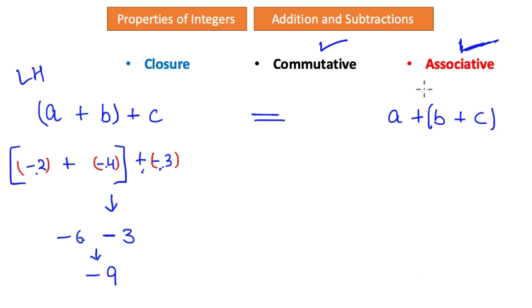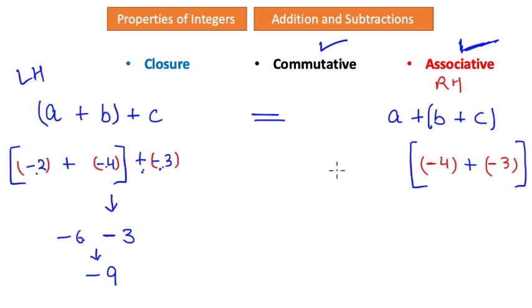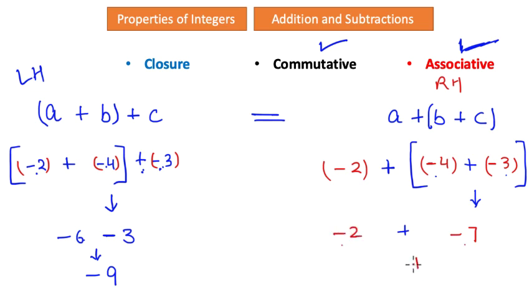Now applying the same numbers to the right-hand side: group B and C first — negative four added with negative three gives negative seven. Then negative seven added with negative two gives negative nine. Clearly the left-hand side equals the right-hand side, and that is what the associative law states for addition — it does not matter how you pick your groups; the result is always the same.